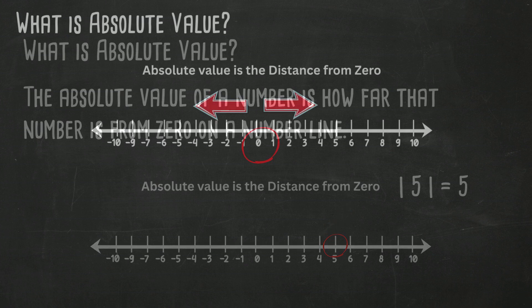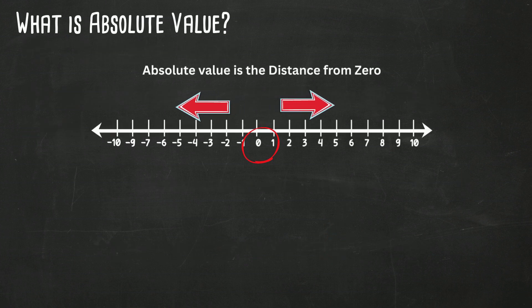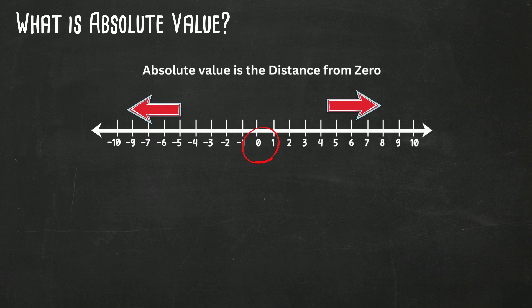Again, the absolute value of a number is a measure of how far the number is from zero on a number line. So what about negative numbers? Do they have a negative absolute value?